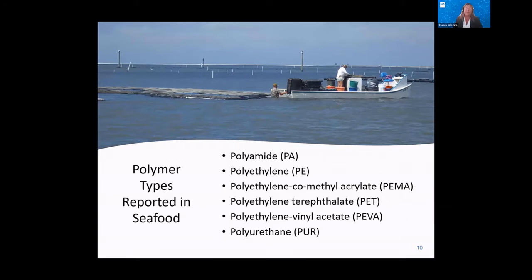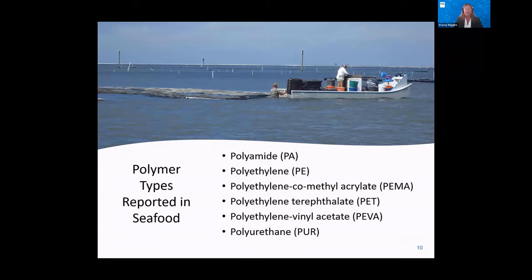This slide presents some example polymer types found in seafood, including polyamide, polyethylene, polyethylene comethylacrylate, polyethylene terephthalate, polyethylene vinyl acetate, and polyurethane. It is notable that these polymer types found in seafood appear to be more diverse than the polymer types found in other commodities. In terms of the shapes of microplastics found in seafood, microfibers have been reported to be the dominant shape, followed by fragments.